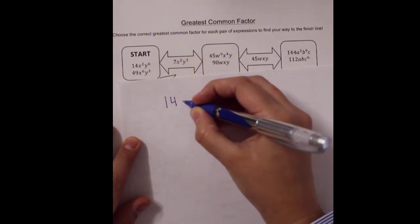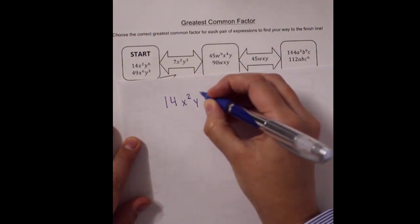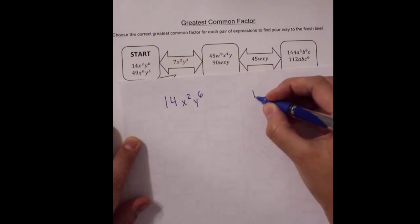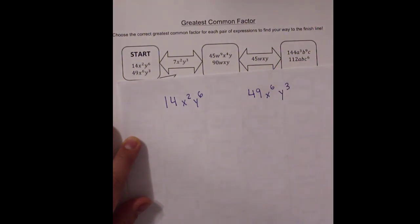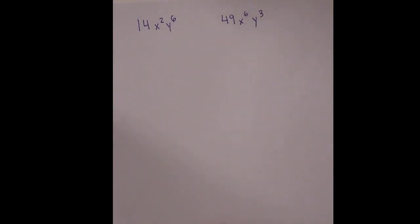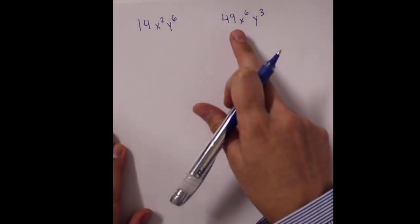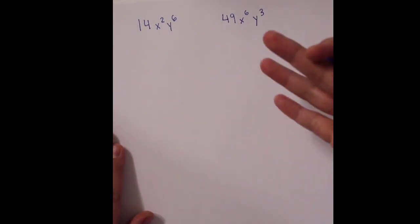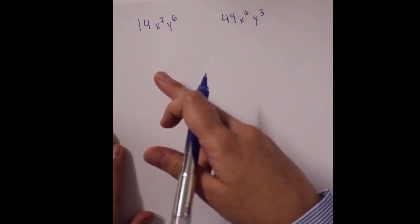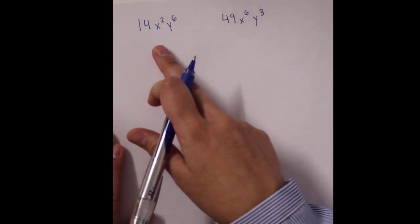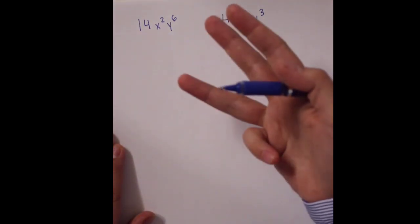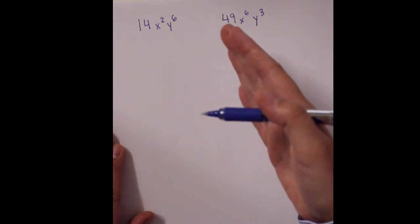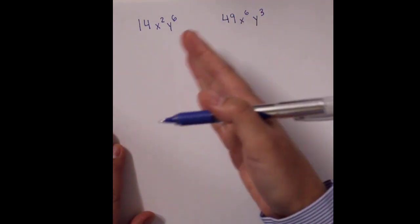Our two expressions are 14x²y⁶ and 49x⁶y³. The question is: what do these have in common? Greatest means largest, common means what do they share, and factor means what's multiplied to create these. So greatest common factor — what's the biggest thing they share that multiplies to make these?